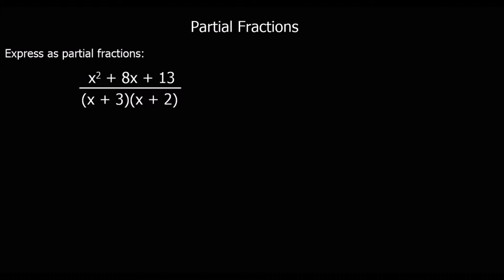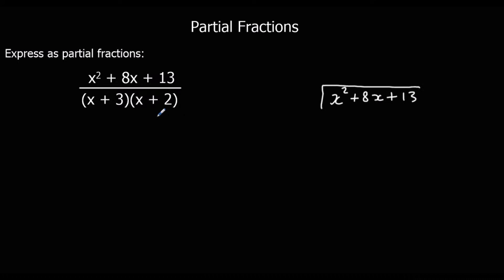To split an improper fraction into partial fractions, we need to do something first: we need to make it a proper fraction, and we do that with algebraic division. So we're going to take the numerator, x squared plus 8x plus 13, and divide it by the denominator. If we expand the bracket, we get x squared plus 5x plus 6.